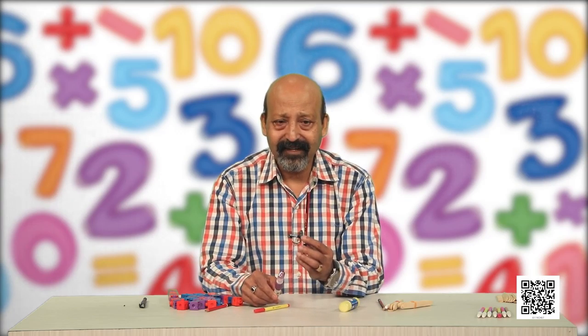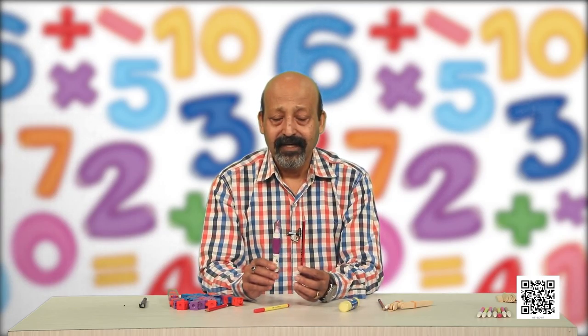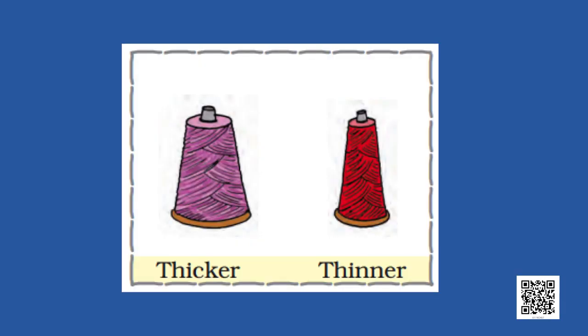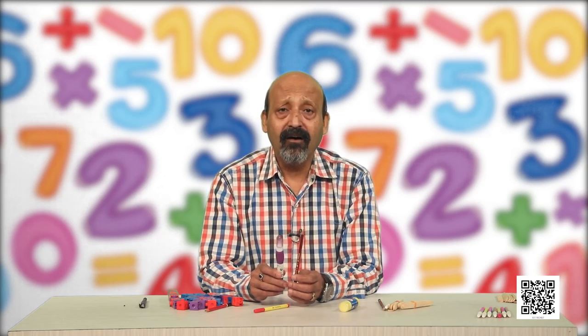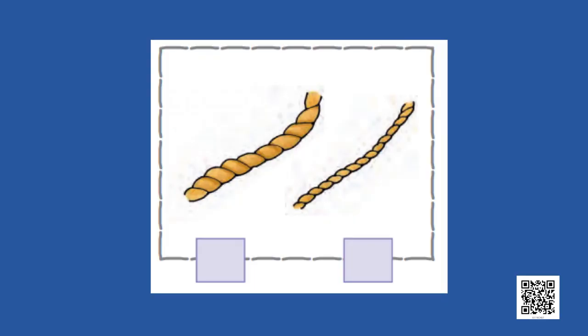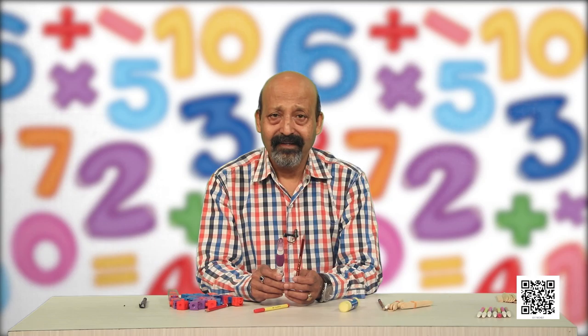I have these two objects with me. Can you tell me which is thicker and which is thinner? This one is thicker than this, and this is thinner than this. On the screen, one is thicker and another is thinner. These are two thread rolls — one roll is thicker than the other roll, and the other roll is called thinner. There are two pieces of rope — one piece is thicker, another is thinner. Can you tell which one is thicker and which is thinner?